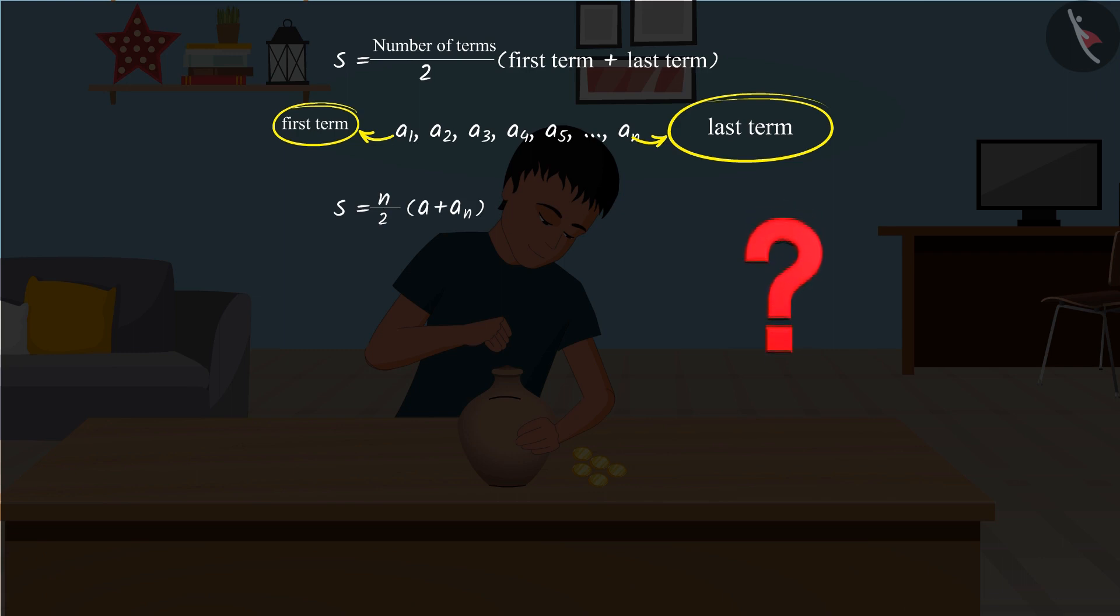Can you tell the nth term of the arithmetic progression? Absolutely correct. It will be a plus n minus 1 multiplied by d, where d is the common difference of the arithmetic progression. If we substitute the value of a_n in this formula, we get this formula, which represents the sum of the first n terms of the arithmetic progression whose common difference is d.